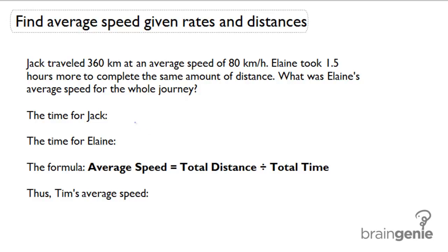First, let's calculate the time for Jack. The time for Jack will be 360 divided by 80, which will give us 4.5 hours.